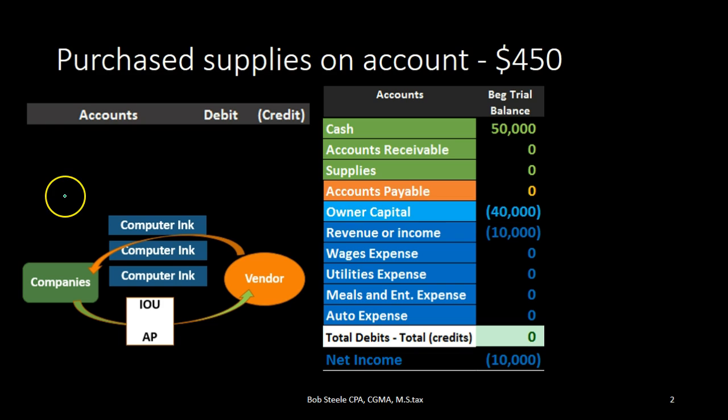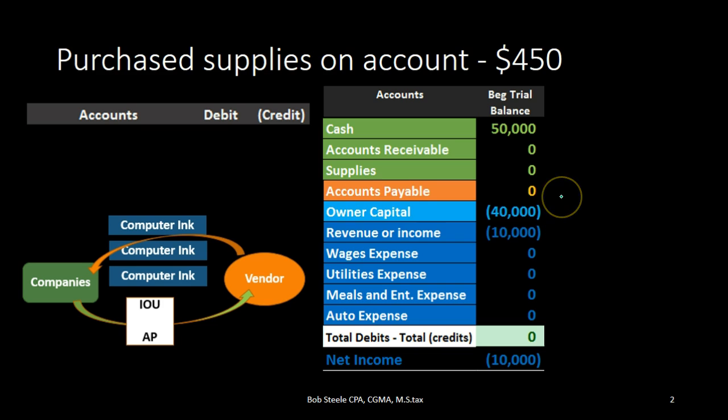We will record the journal entry up here on the left-hand side and then post that journal entry to the trial balance on the right-hand side, where we have assets in green, liabilities in orange, and the equity section in light blue, with the income statement — including revenue and expenses — in dark blue.